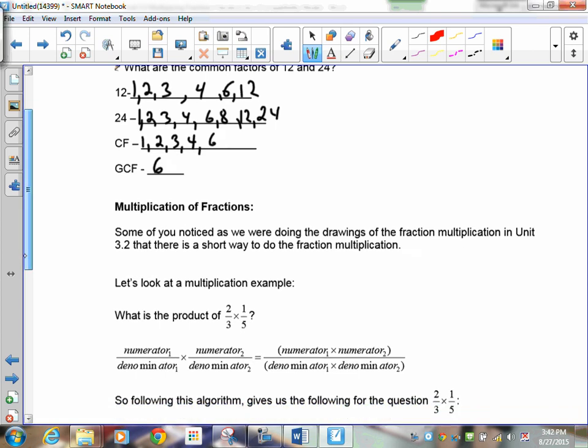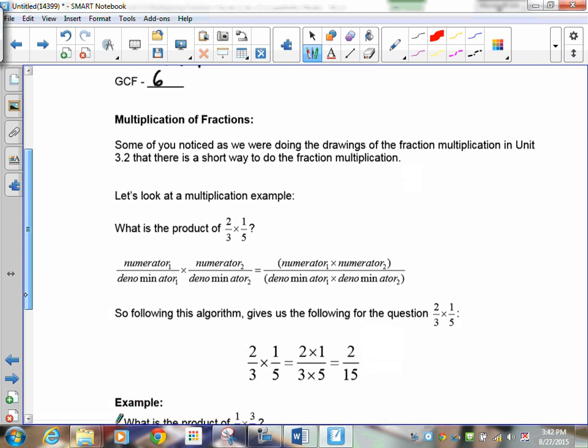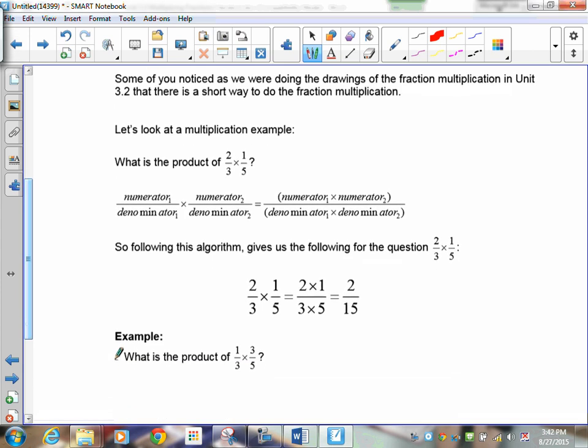Some of you noticed as we were doing the other drawings of the grids that there seemed to be a shorter way to do it. And there is. Let's take a look at the product of 2 thirds times 1 fifth. When we did this as a grid, you took 2 out of 3 rows and 1 out of 5 columns. Then you counted it. But some of you realized that really what was happening is you were taking the numerator times the numerator and the denominator times the denominator.